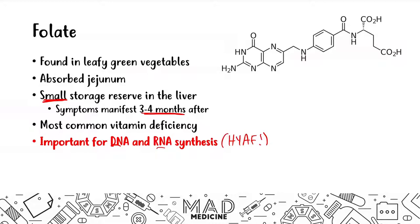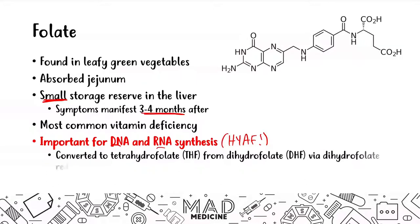Folate is very important for RNA and DNA synthesis. It is converted to tetrahydrofolate from dihydrofolate via dihydrofolate reductase. This is a complex cycle you need to know for Step 1, especially when it comes to folate and vitamin B12 and where they play their roles in DNA and RNA synthesis.